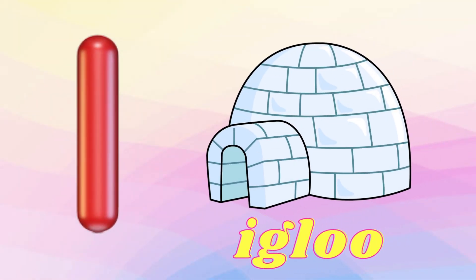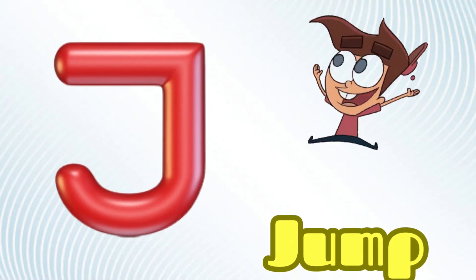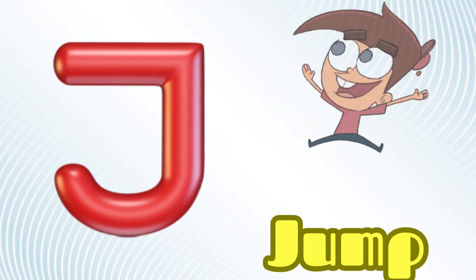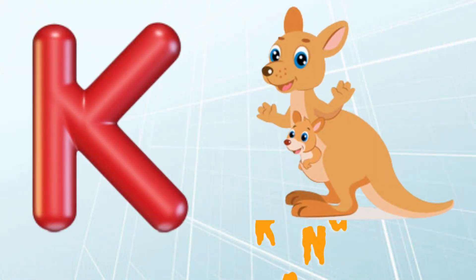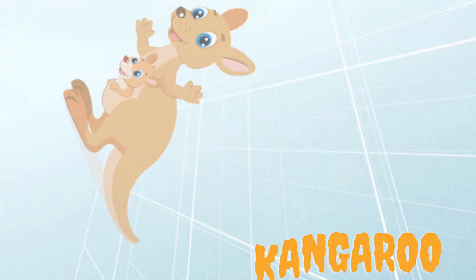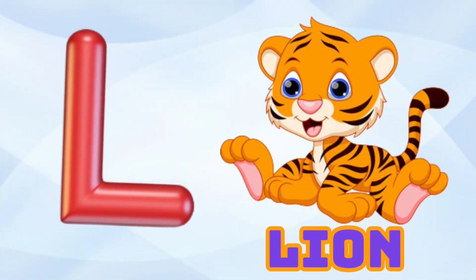I is for Igloo, I-I-Igloo. J is for Jump, J-J-Jump. K is for Kangaroo, K-K-Kangaroo. L is for Lion, L-L-Lion.